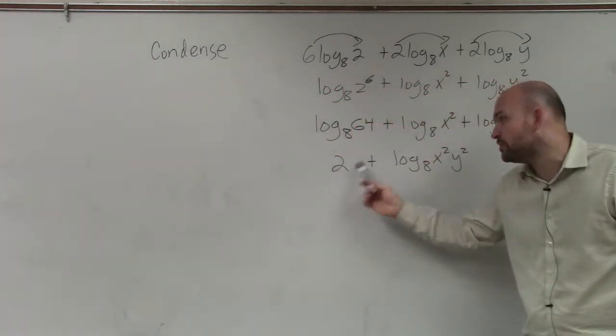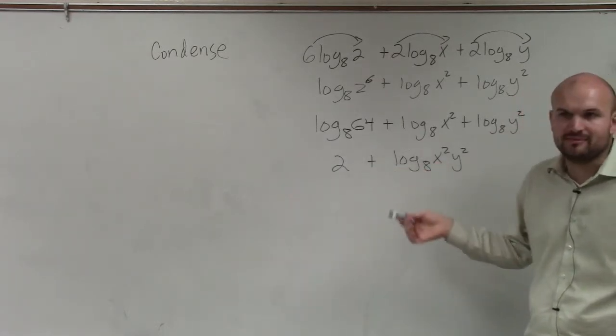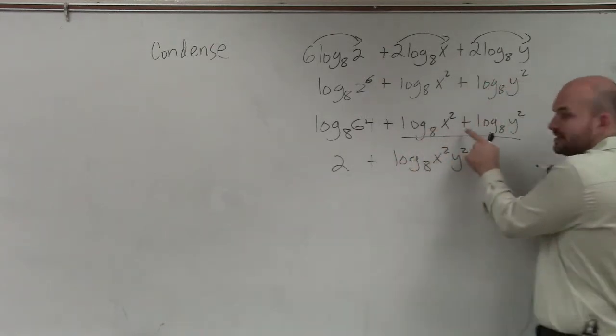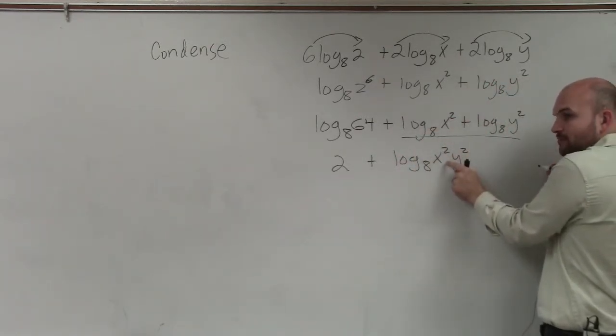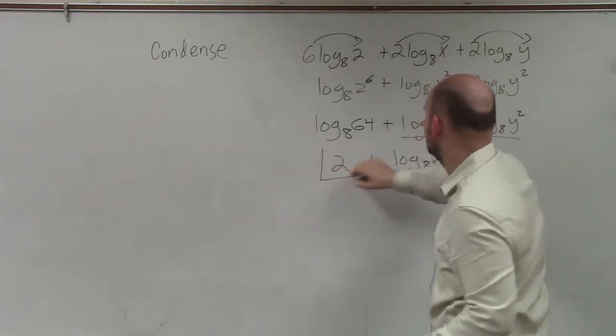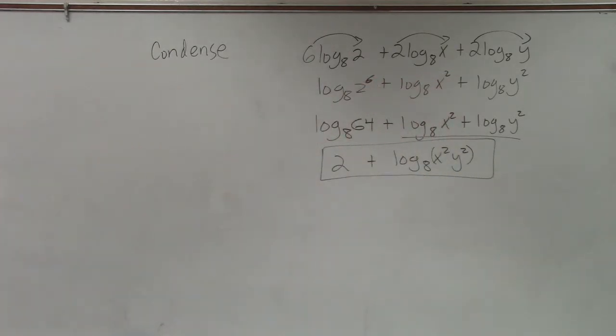I can't combine these by rewriting as multiplication. That only worked when I had logs of the same base. Therefore, my final answer is 2 plus log base 8 of x squared times y squared.